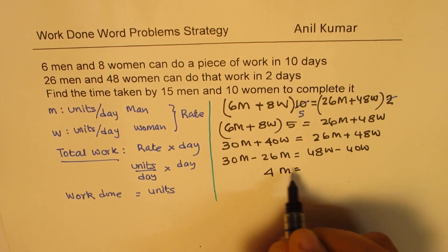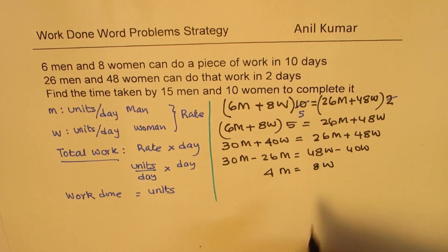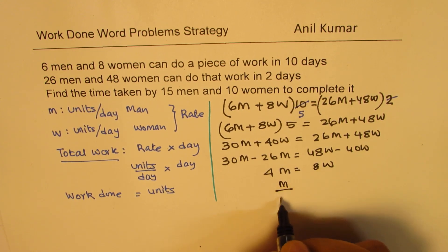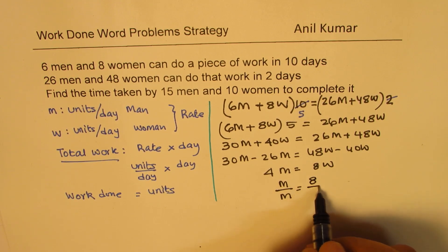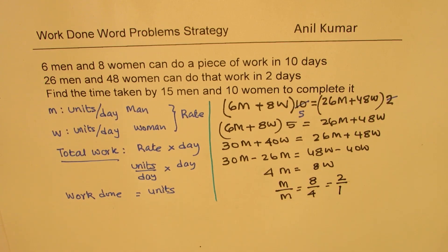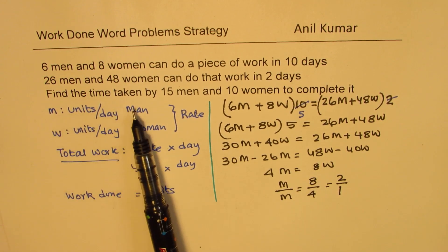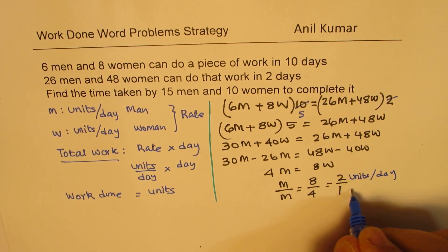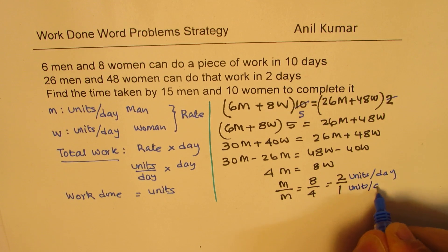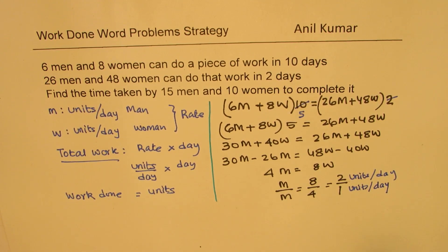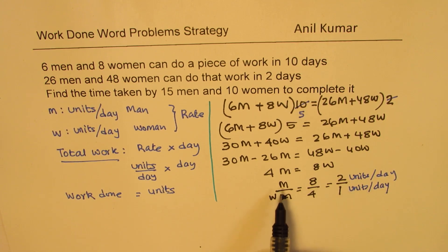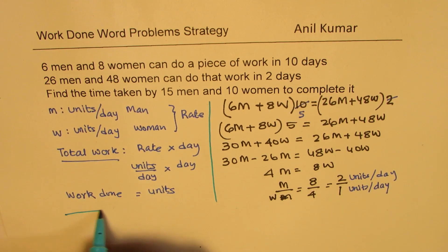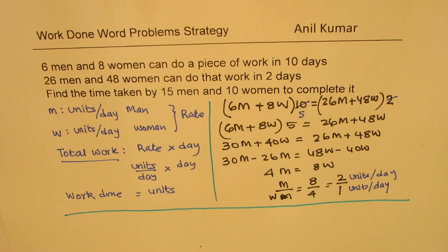So we can write this as 30M minus 26M equals 48W minus 40W, which gives 4M equals 8W. The ratio of work done by men and women comes out to be 8 to 4, or in lowest form, 2 to 1. That means for men it is two units per day, and for women it is one unit per day. We assume a woman can do one unit per day and a man can do two units per day — that's the rate of both men and women for this particular job.